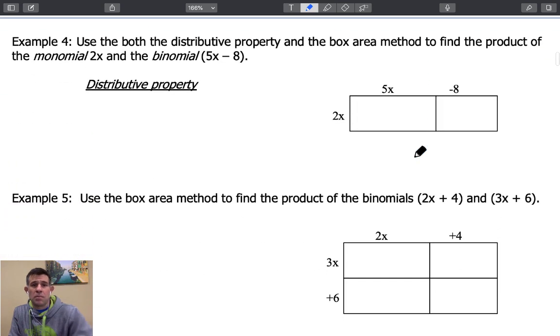Example four. Now we're going to throw in some variables here. So we're going to use both the distribution property and the box area method to find the product of the monomial, which remember is just a singular term, and the binomial 5x minus 8.